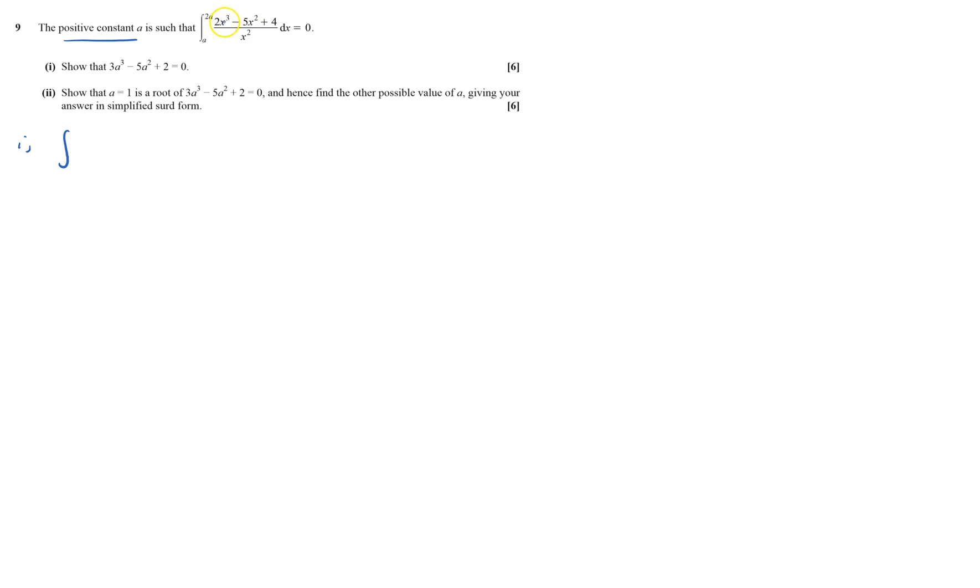And this means 2x cubed over x squared, so that'll be 2x, minus 5, that'll be minus just 5, because x squared over x squared is nothing, and then plus 4 over x squared, which is plus 4x to the minus 2 dx.